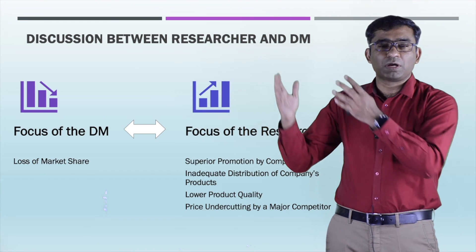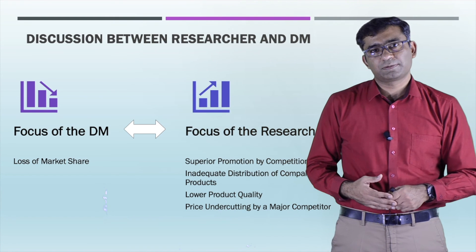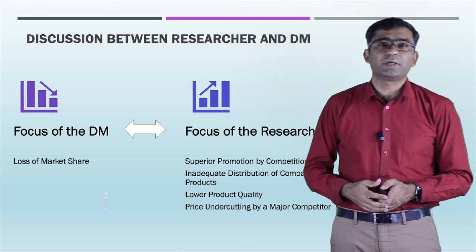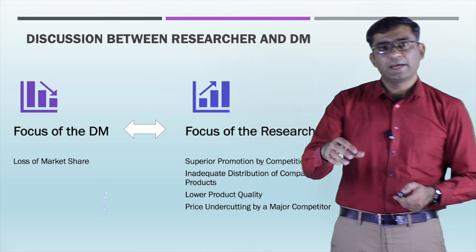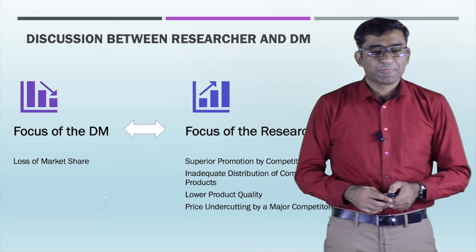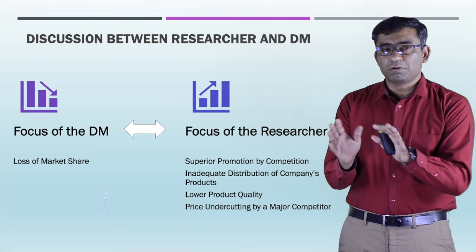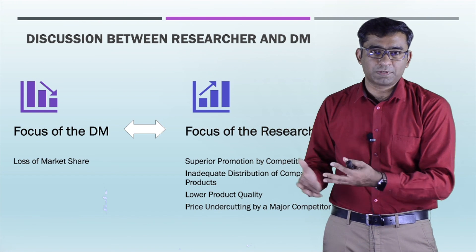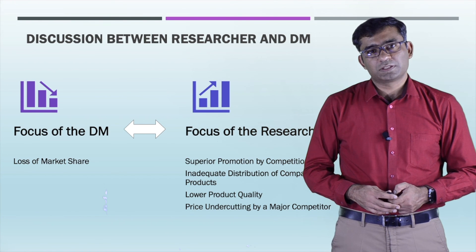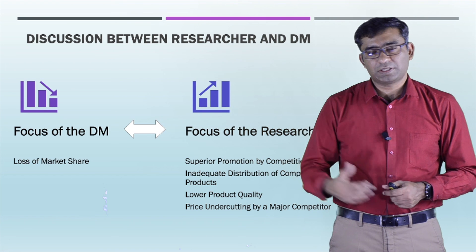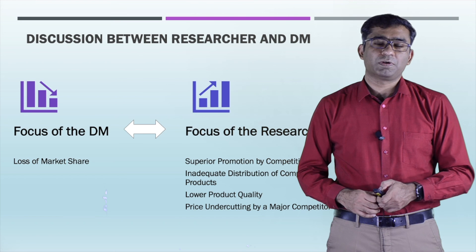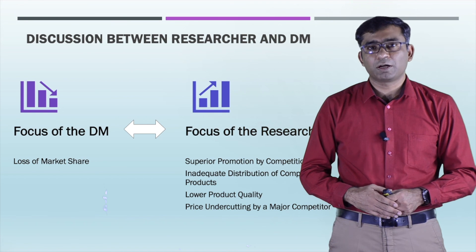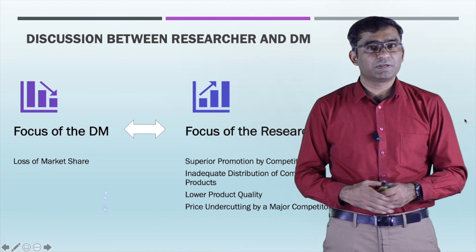To answer the simple management question — why have sales decreased — you need to identify all factors that can cause this decrease. List down all possible reasons. The management question is very simple, but for research there are many causes that can create this problem in sales. You have to list all of them to find the perfect solution for the decision-making problem. These two things are very much interlinked but at the same time very different.